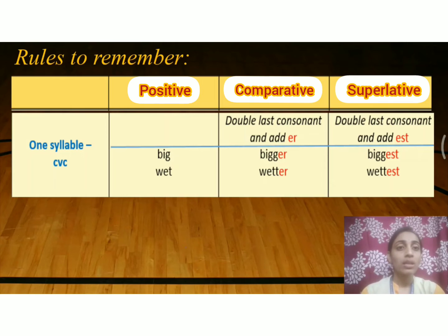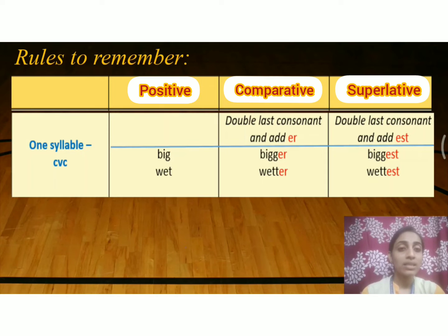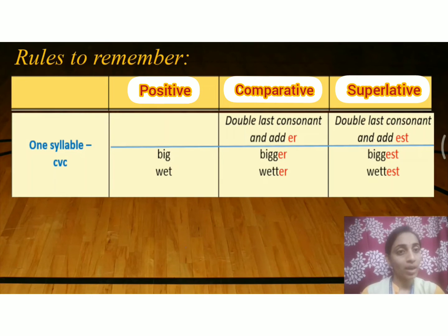The comparative form of 'wet' is W-E-T-T-E-R: wetter. The superlative form of 'wet' is W-E-T-T-E-S-T: wettest.